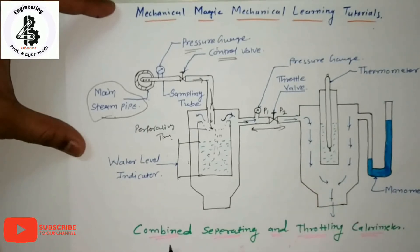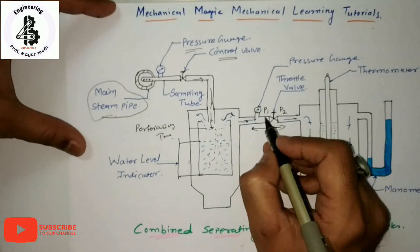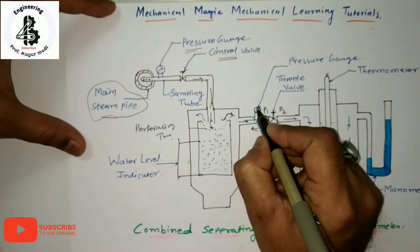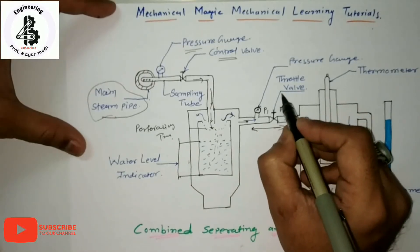Here is the combination effect of combined separating and throttling calorimeter. Once again measuring the pressure P1, and after the throttling process with the throttling valve, the second pressure P2.